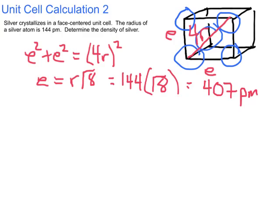In the previous video, I mentioned you've got to be familiar with working with units like nanometers and angstroms and picometers, so you're going to want to be able to convince yourself that 407 picometers is also known as 4.07 times 10 to the minus 8 centimeters.